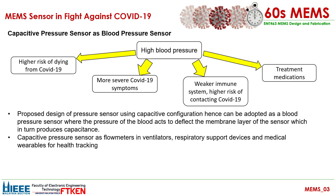According to a published study, patients with high blood pressure have a risk of dying from COVID-19. Without taking medication, it could increase the risk of vascular complications and symptoms such as headache, fatigue, cold, and difficulty breathing. A weakened immune system is one reason people with high blood pressure and other health problems are at high risk for coronavirus, leaving the immune system unable to fight against the virus. Treatment medications such as ACE inhibitors may also increase the possibility of contracting coronavirus.